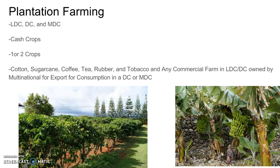Let's start with plantation farming. This is a style of commercial farming — it is the only commercial farming you should see in LDCs and DCs, though there are plantation style farms in MDCs as well. They grow cash crops, typically one to two crops. This is how cotton is grown in the United States — in the Southeast and in Texas, Louisiana — as well as sugarcane in Florida.